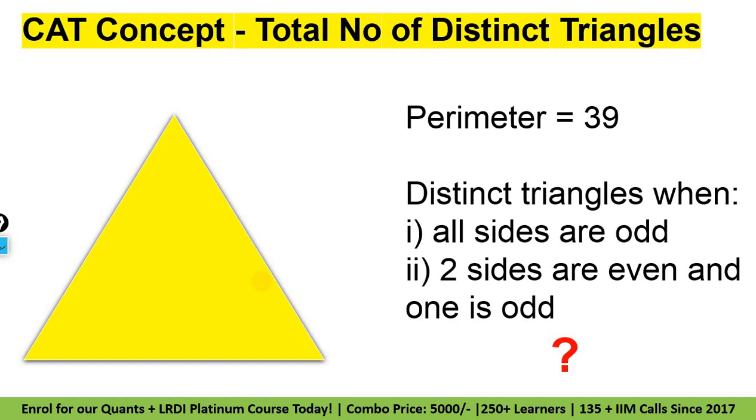Polar push derivate derive nahi karna padega. But derivation aana chahiye. So koi bhi agar twist kiya CAT ne, toh derivation nahi lagega, woh trick nahi lagegi tab.